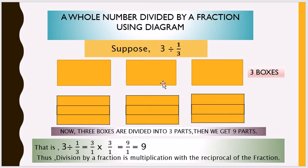We have boxes 1, 2, and 3. Now we divide all 3 boxes into 3 parts each — 1 box divided into 3 parts. How many parts do we get in total? We get 9 parts. That is, 3 divided by 1 by 3 equals 9.